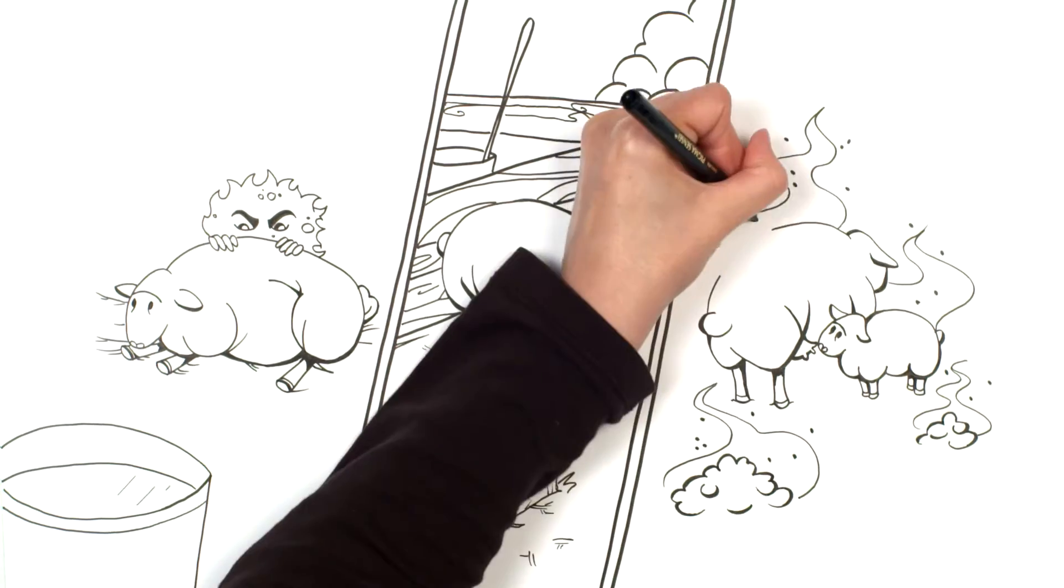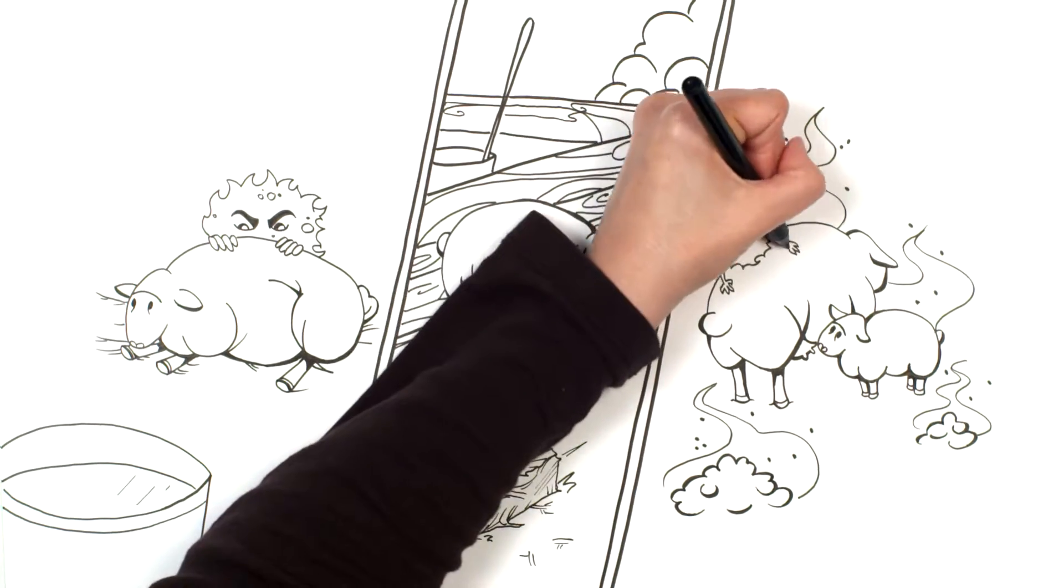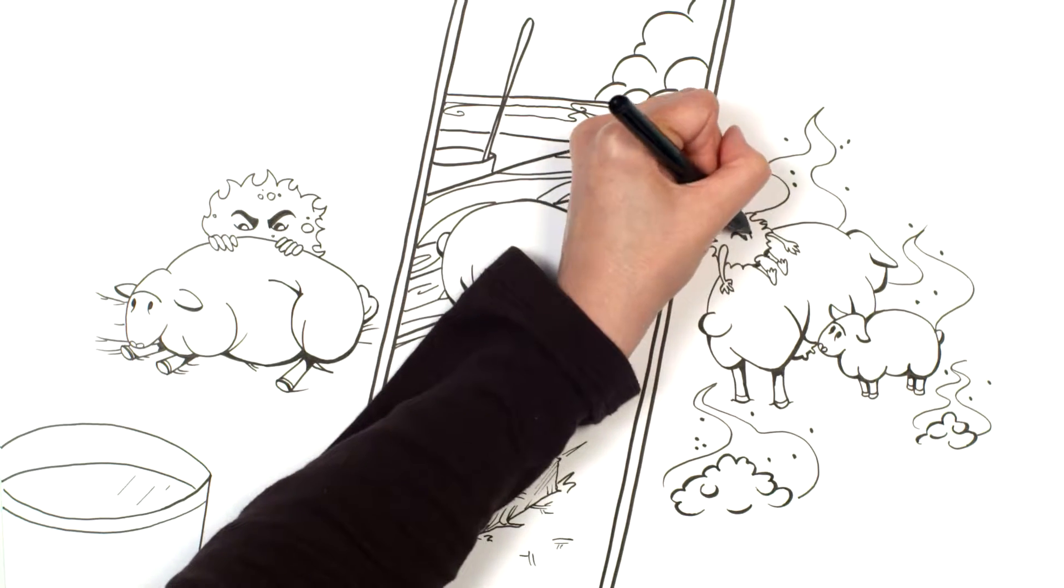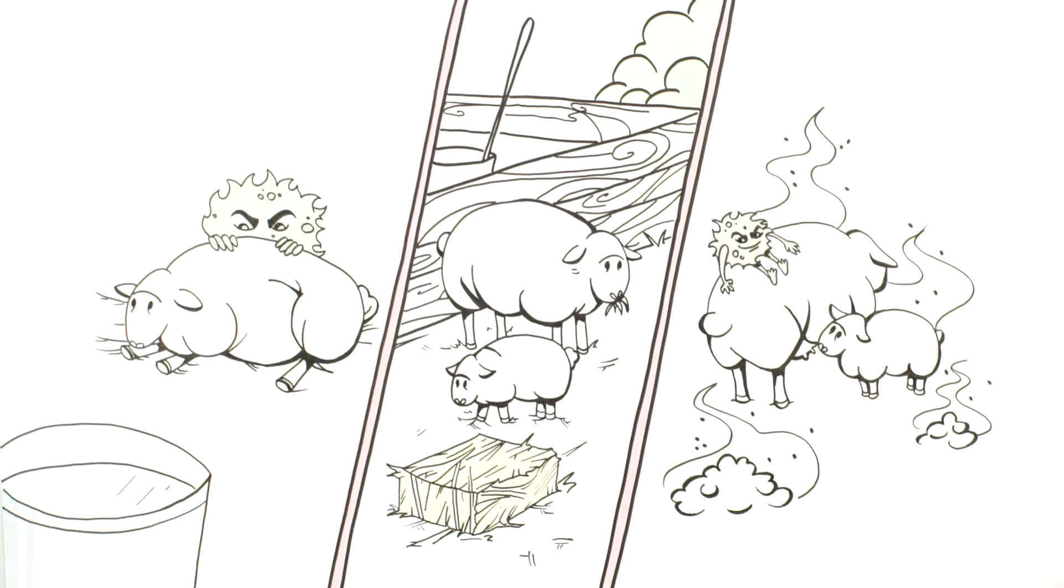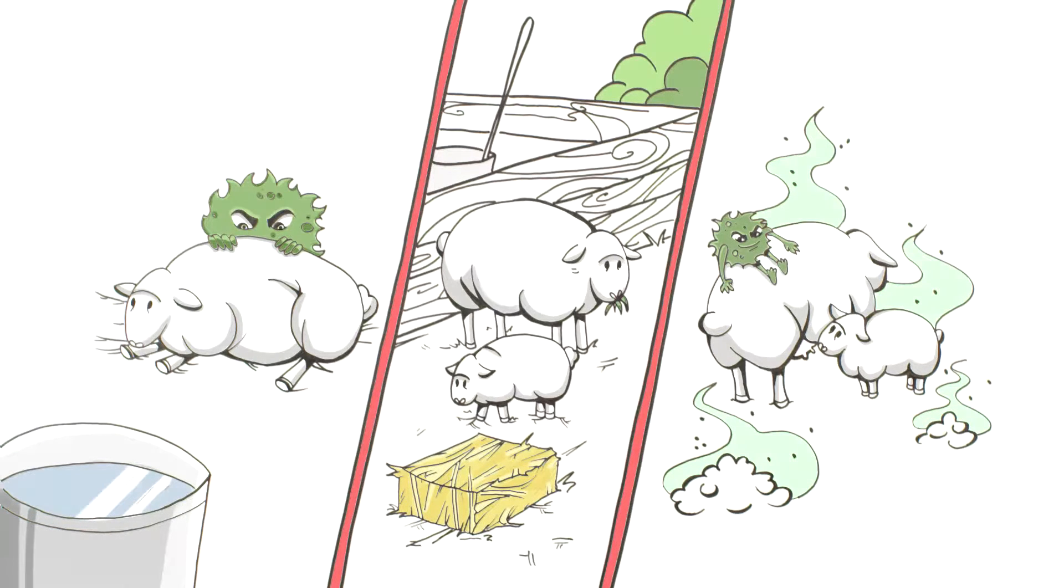Lambs can be exposed to MAP in lots of different ways. Newborns sucking on dirty wool, nursing teats contaminated by dirty bedding, eating hay, or even drinking water contaminated with manure. And on top of that, the lambs born from my infected replacements could have consumed MAP shed into the colostrum and milk.